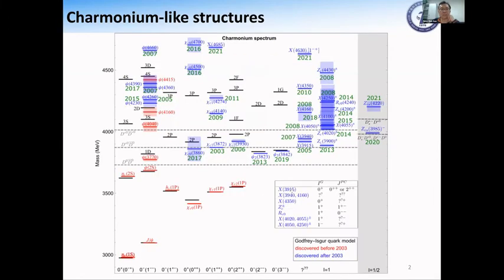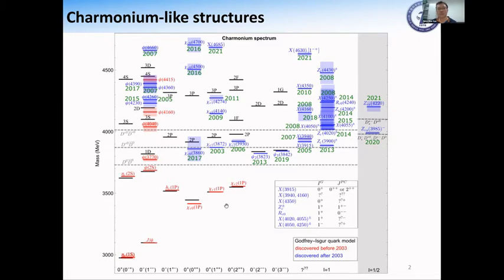Let me just explain a little bit on this spectrum. The whole story actually starts from the year 2003, because the B factories started to take data on the charmonium spectrum. What I show here is a comparison of the observed charmonium spectrum in comparison with the quark model prediction from the Godfrey-Isgur quark model. The black lines are the charmonium spectrum predicted by this quark model, and the red lines are the states discovered before the year 2003. We see that basically the agreement is excellent, except for a couple of them in the high-energy region. But the scenario just changed completely from 2003 when the Babar collaboration observed the X(3872).